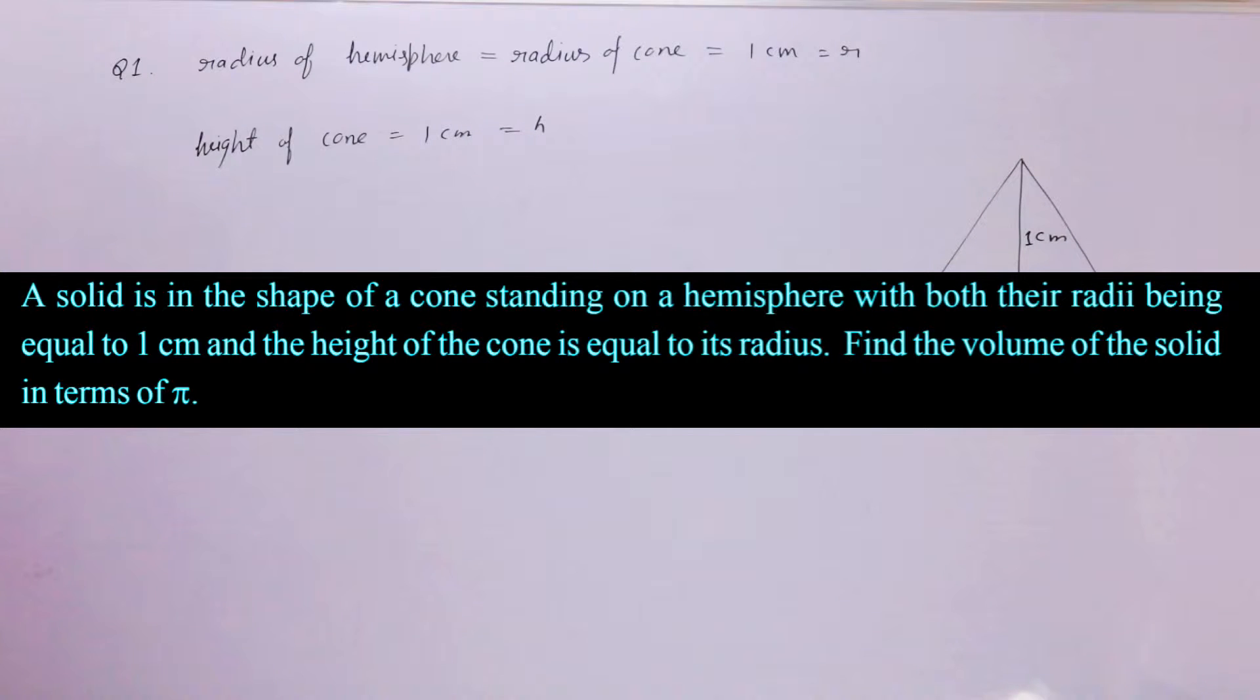Question number 1. A solid is in the shape of a cone standing on a hemisphere with both radii being equal to 1 centimeter and height of the cone is equal to its radius. Find the volume of the solid in terms of π.